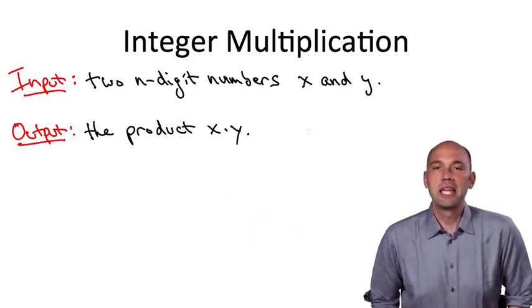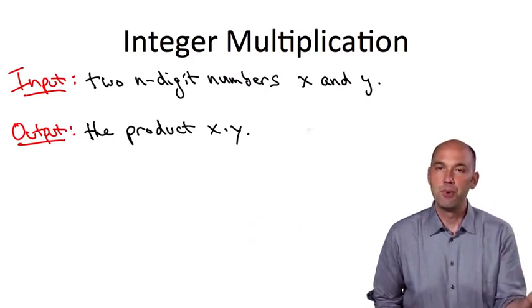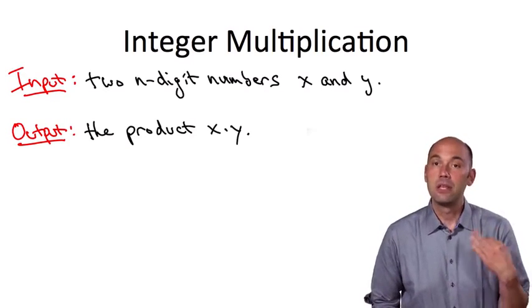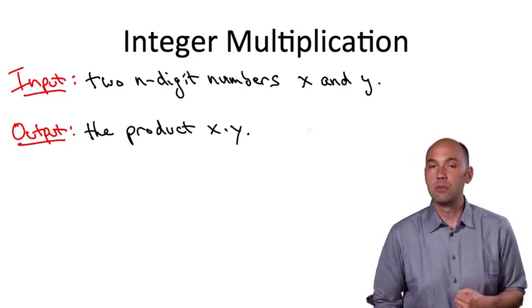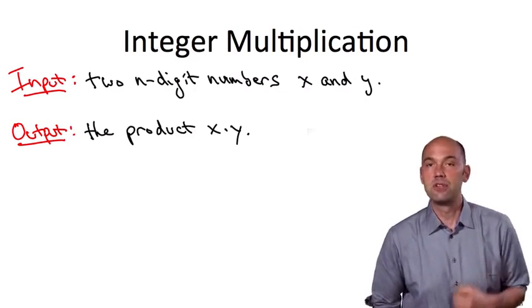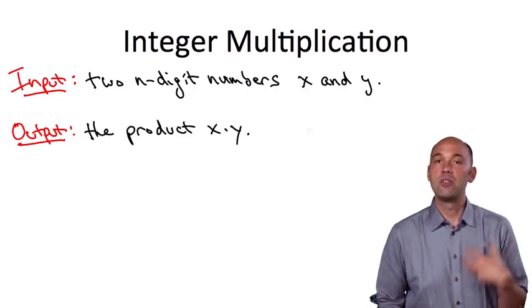Returning to the integer multiplication problem, having now specified the problem precisely - the input, the desired output - we'll move on to discussing an algorithm that solves it, namely the same algorithm you learned in third grade. The way we will assess the performance of this algorithm is through the number of basic operations that it performs.